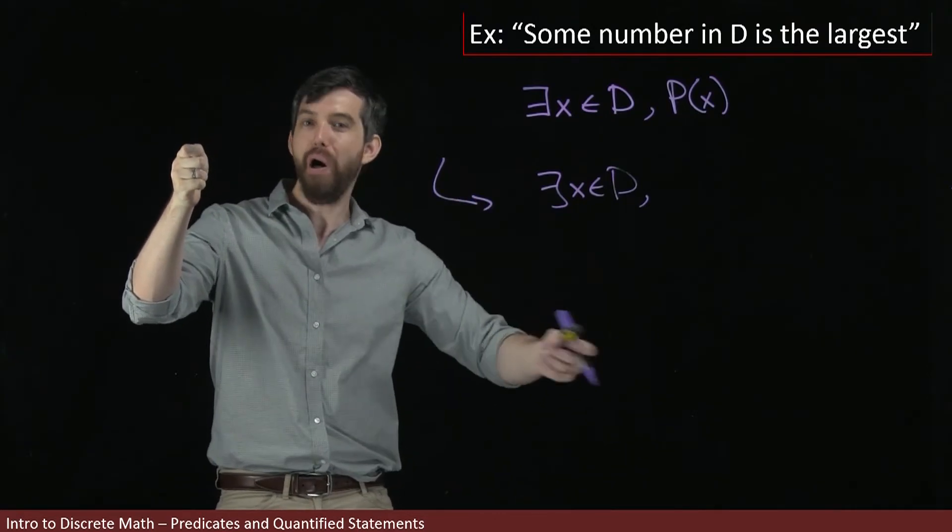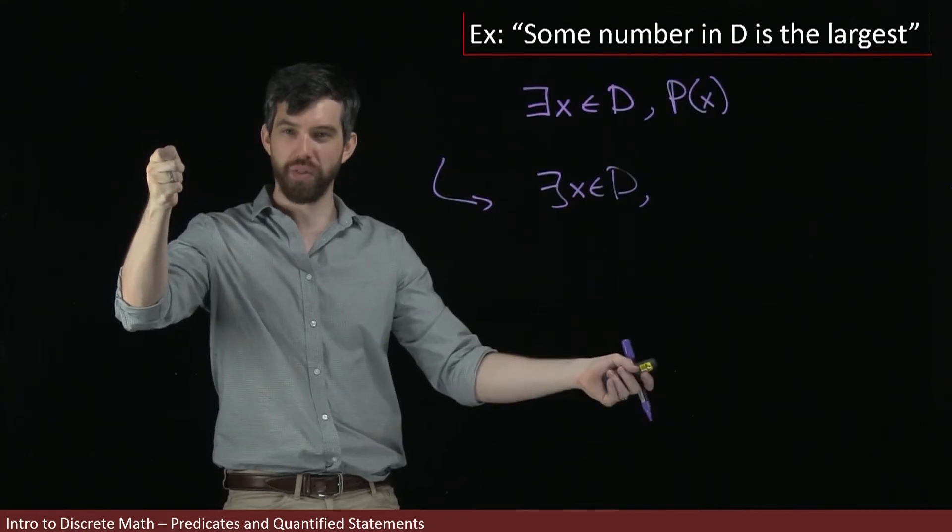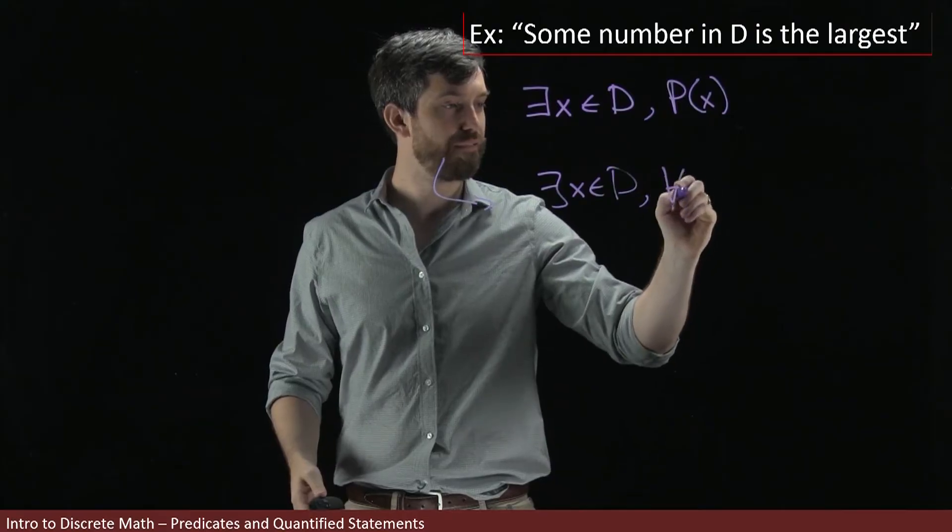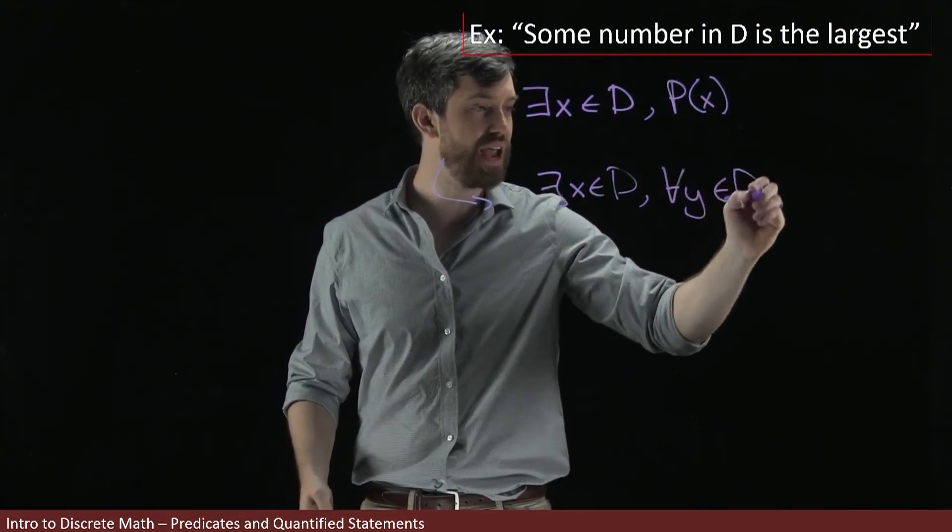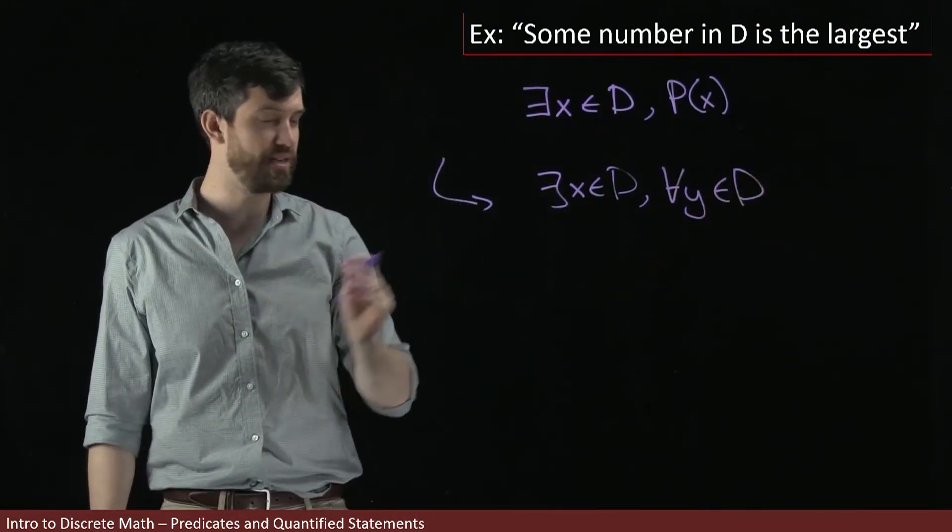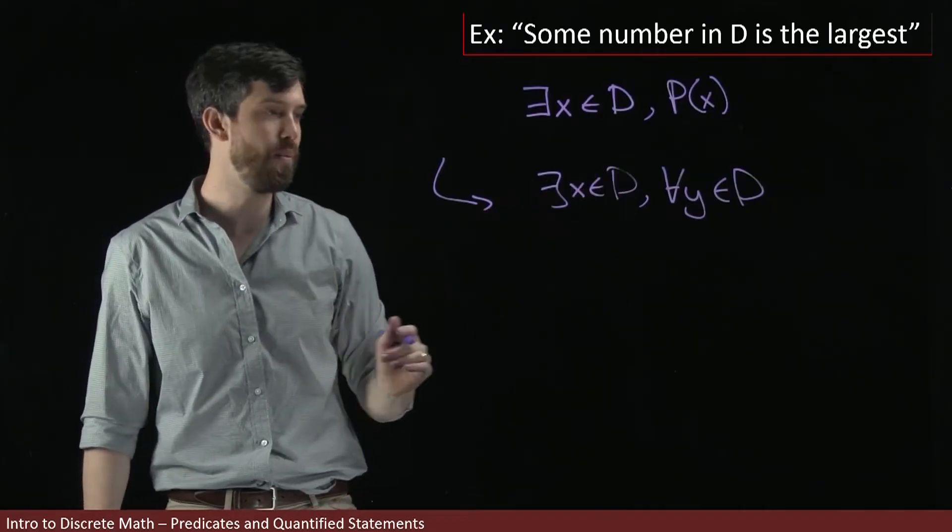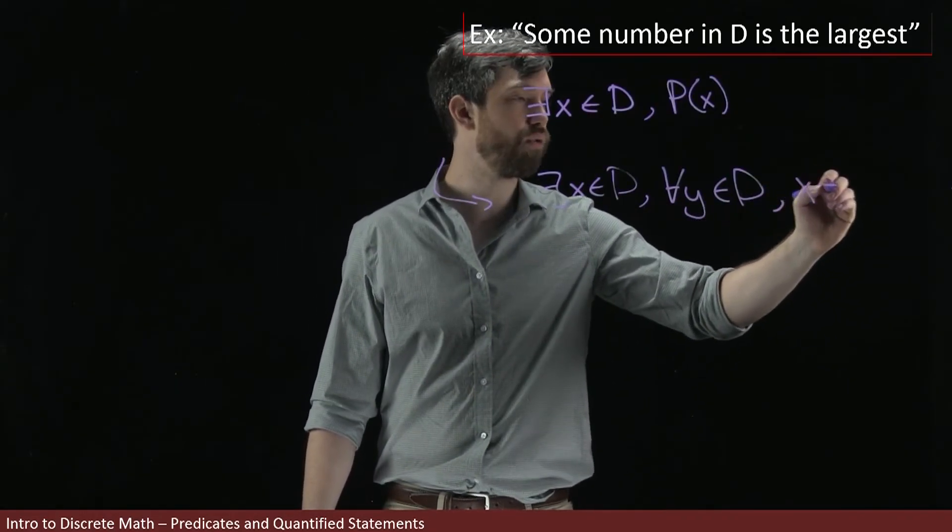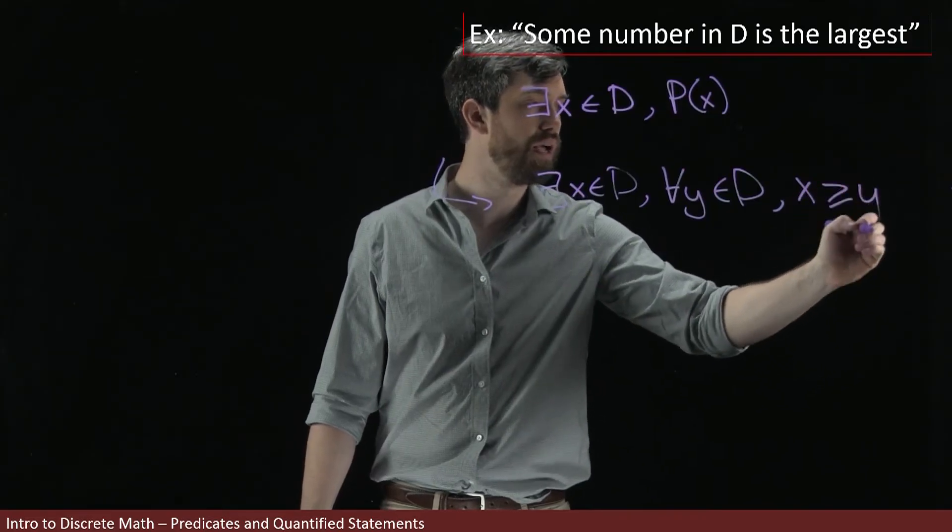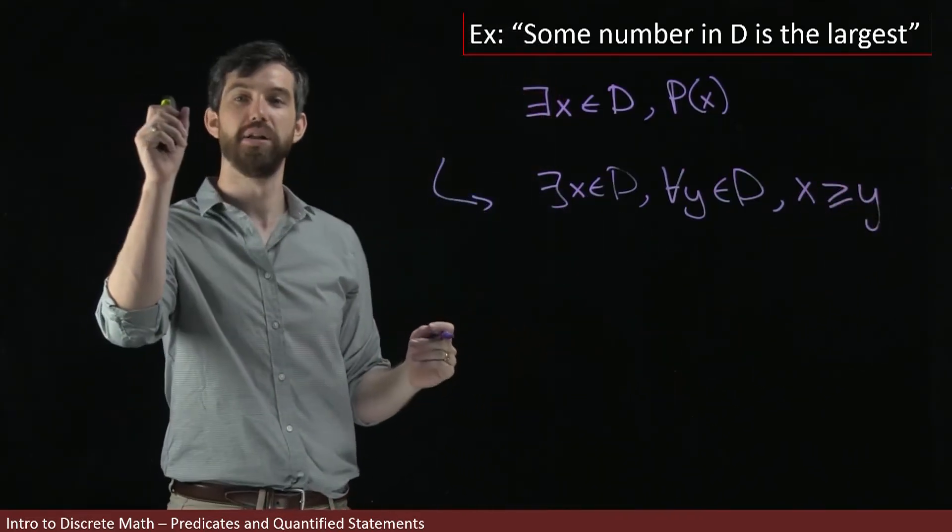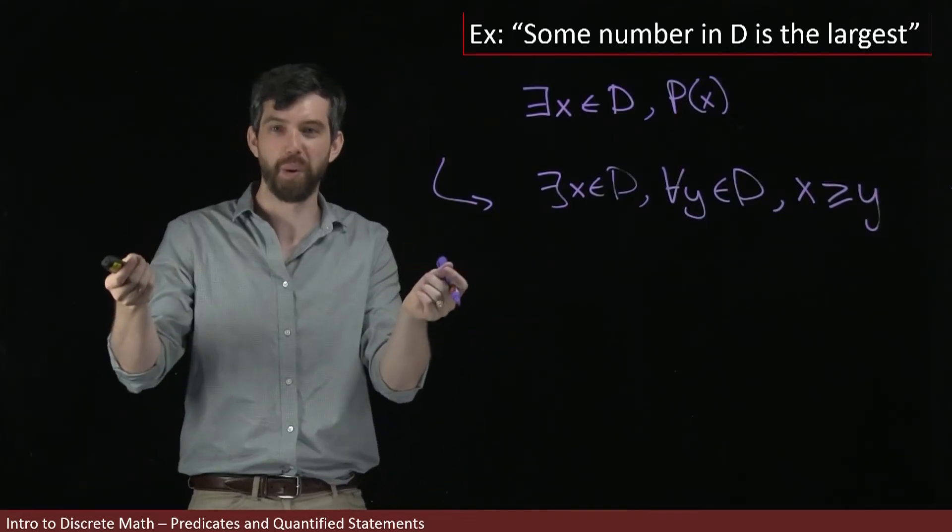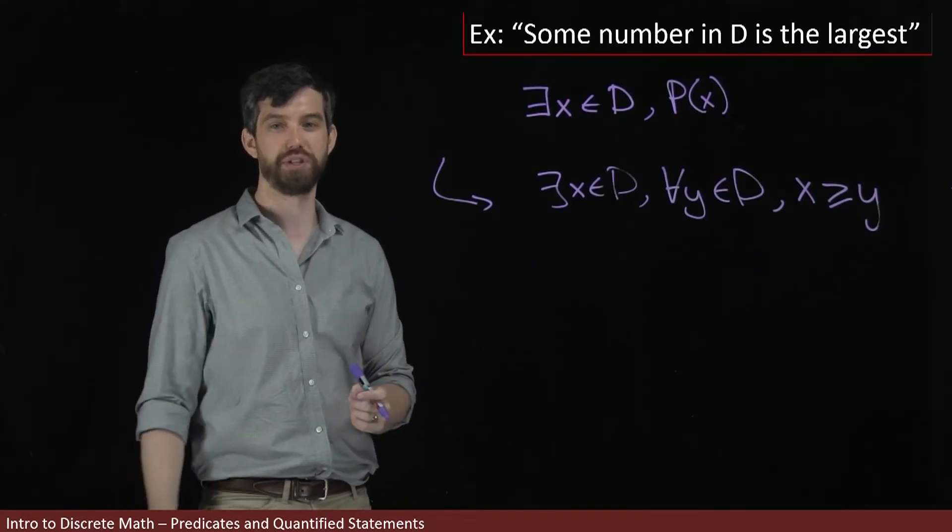So in other words, for all y's, the x is bigger than it. My predicate becomes for all y inside of my domain as well. Inside my domain, it has the property that x is greater than or equal to y. If x is the largest number, I'm leaving open the possibility that there might be multiple ones that are both equal as the largest number.